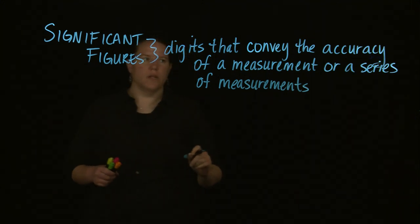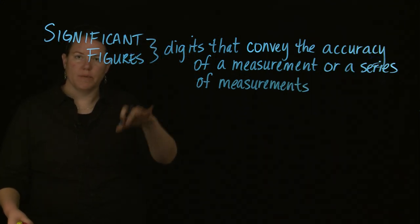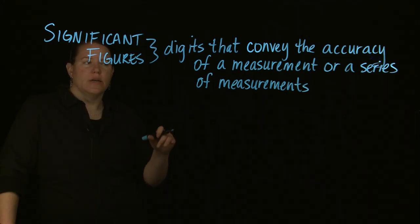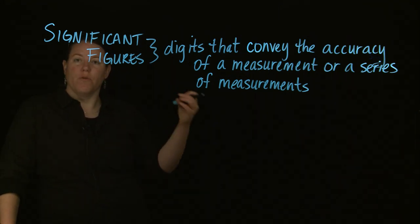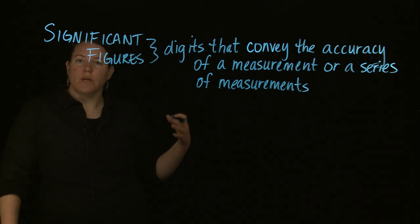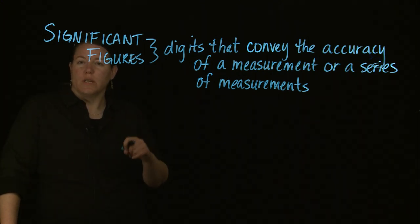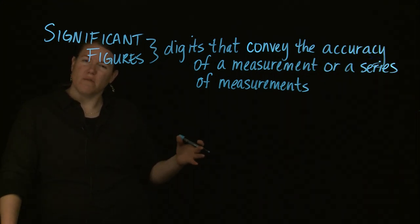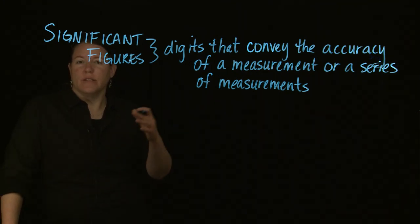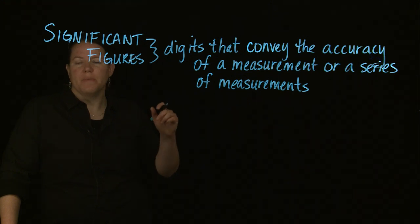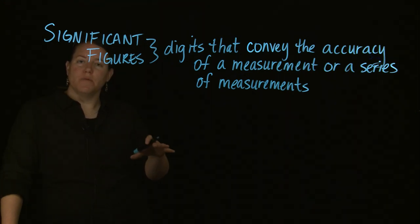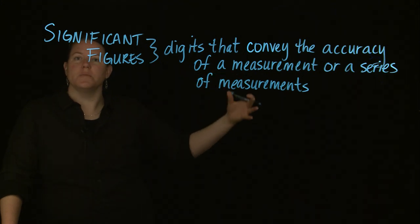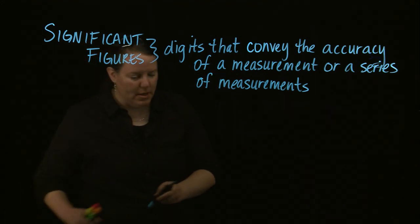Accuracy is something we could talk about — we'll cover the difference between accuracy and precision in another video. Basically, the idea here is that we want to make sure we reflect in our final answer the most uncertain of our measurements, or what we would convey as the least accurate of our measurements. You can find the number of significant figures in a measurement, or in a series of measurements if you do some kind of mathematical operation on them.